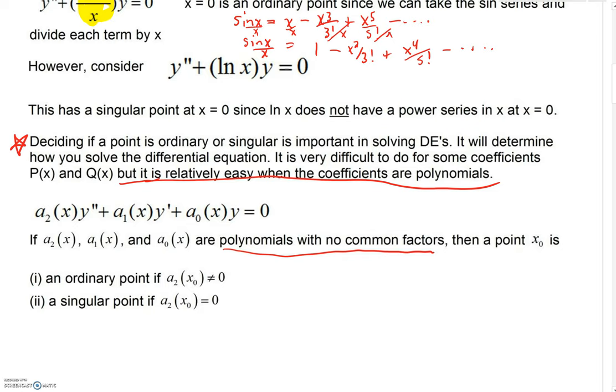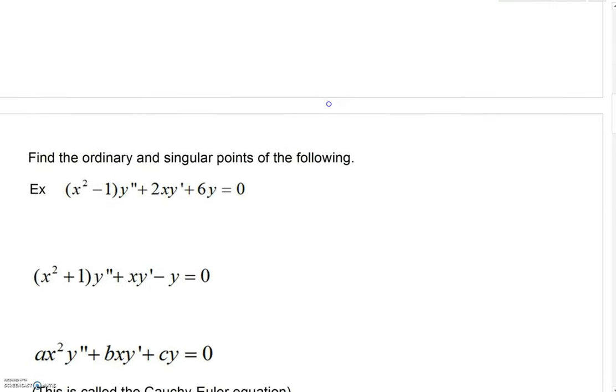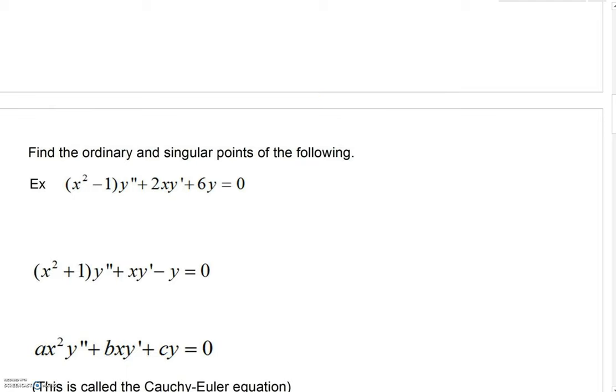Then, x sub 0, x naught, is an ordinary point if this lead coefficient, when you substitute that x value in, is not 0. Then it's ordinary. And it will be singular if it is 0. So actually, if we're dividing by a sub 2 of x, if you are dividing by 0 with these polynomials, with no common factors, that will lead to a singular point.